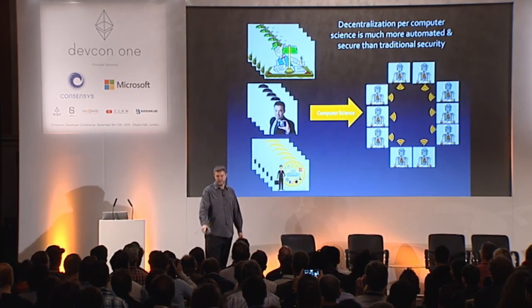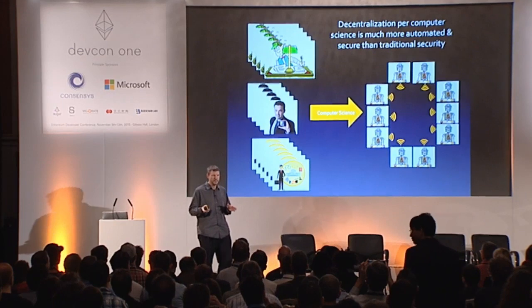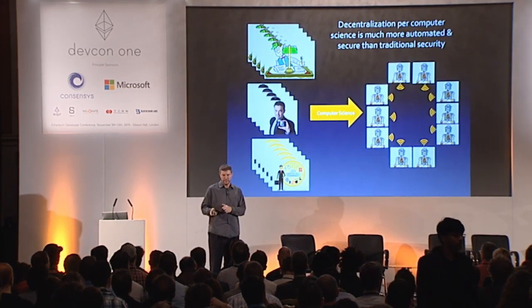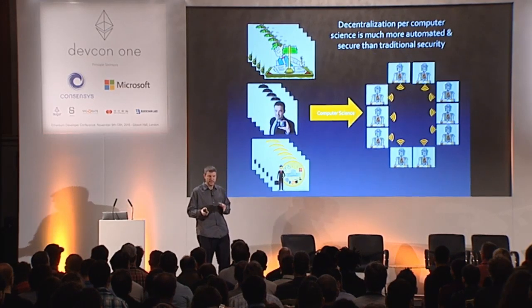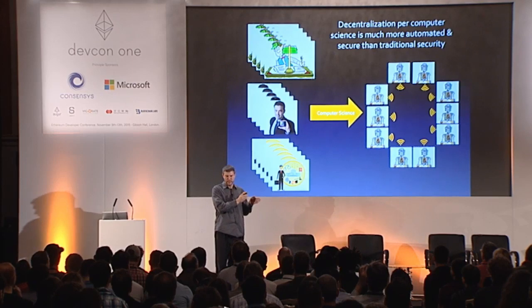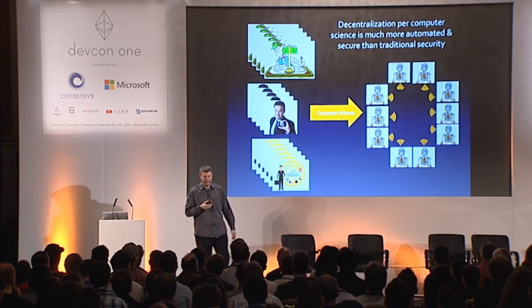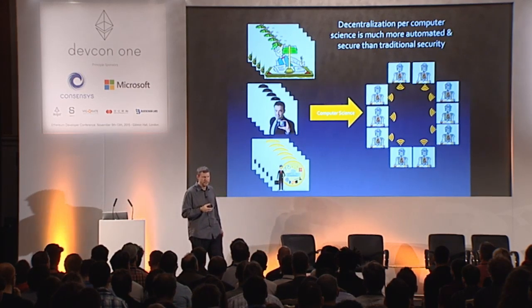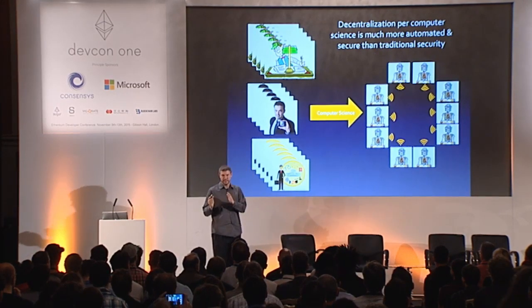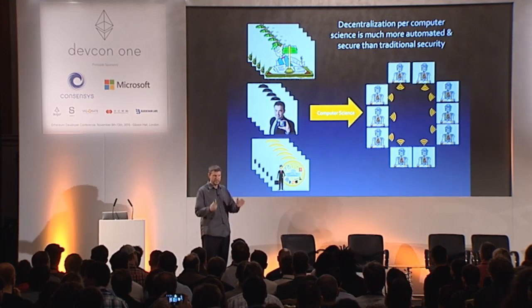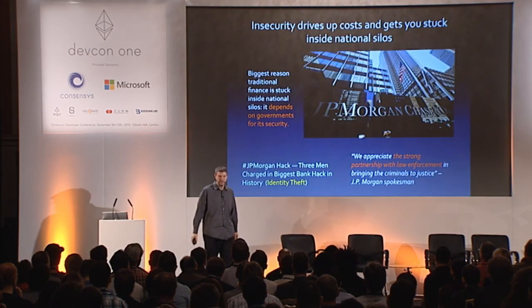What we did was say: let's take decentralization — per computer science, it's much more automated and secure. If we take an Ethereum blockchain and put some smart contracts on it, it's only going to substitute in any given case for a small fraction of what the armies of accountants, investigators, police officers, and lawyers do. But the cost savings is so high that those particular applications are going to be pretty compelling.